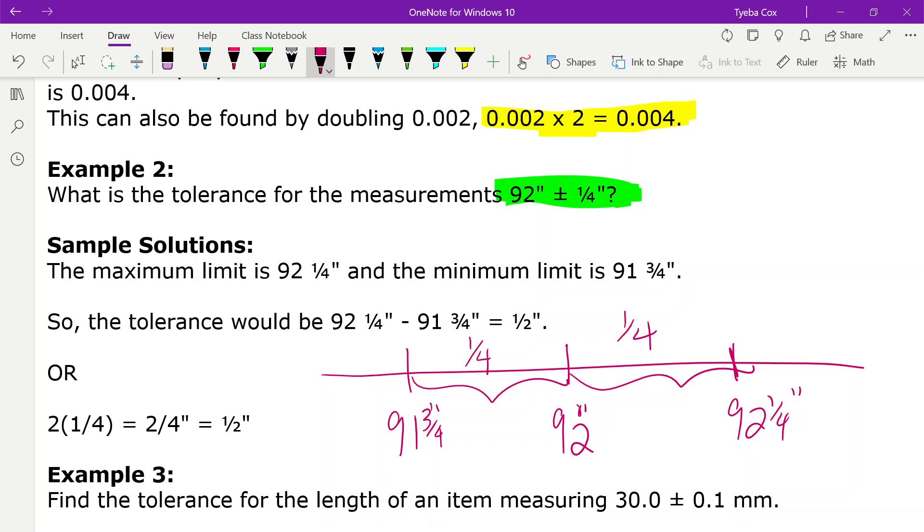So if we add a quarter of an inch to 92 inches, we get 92 and a quarter of an inch. So our tolerance that we're allowed is this part added together. So that's a quarter of an inch plus a quarter of an inch, which gives us a half of an inch.